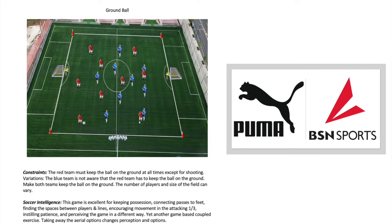Here's a really interesting concept: the red team is not allowed to play the ball in the air. It really alters their decision-making. Don't tell the blue team about the constraint — if you tell them, they might overcompensate knowing the red team can't play in the air. This constraint forces players to play positionally, in between lines and players, looking for good runs and through balls on the ground. It really suits a possession-oriented style of play.